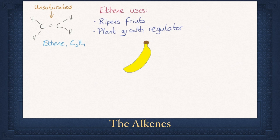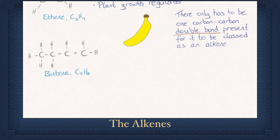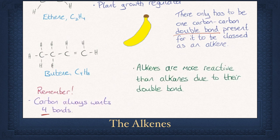Bananas are picked from trees still green. Ethene is a gas that is applied during the boat journey so that they will be ripe when they are on the shelves in shops. This is why bags around bananas have tiny holes in them — to allow ethene gas in and out. Alkene properties are much the same as alkanes. They are more reactive, however, due to the high electron density among the double bonds. Similar to alkanes, their boiling points increase with size due to van der Waals forces.